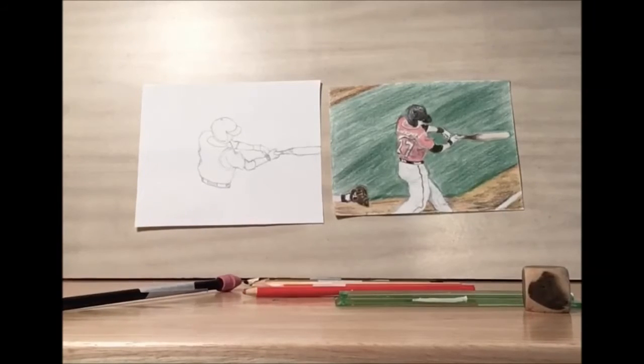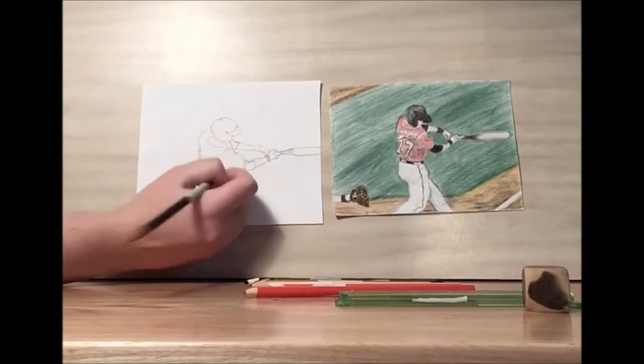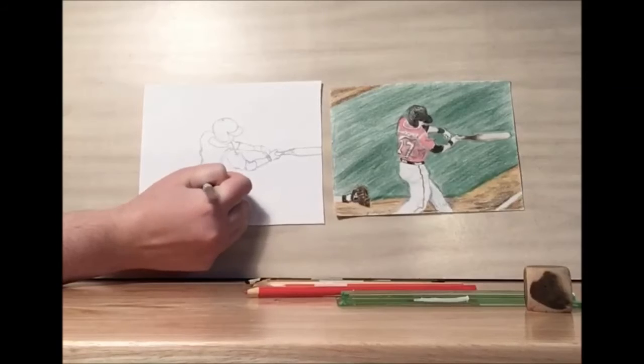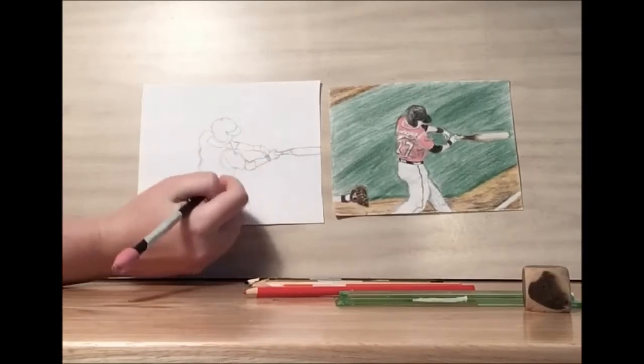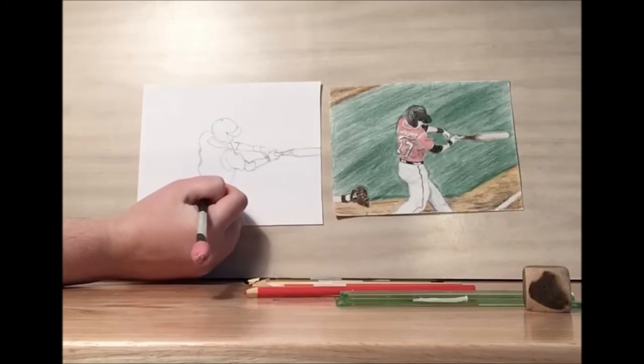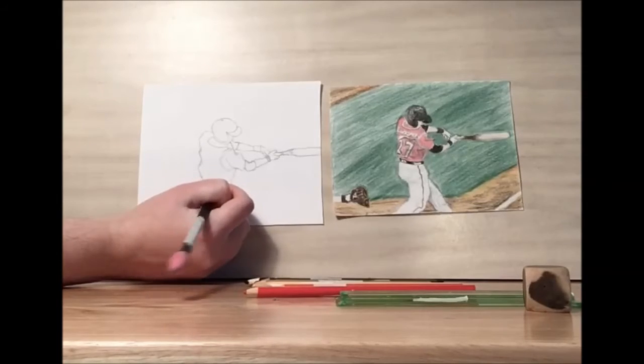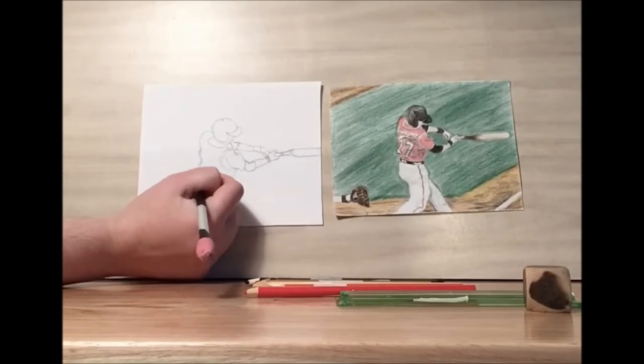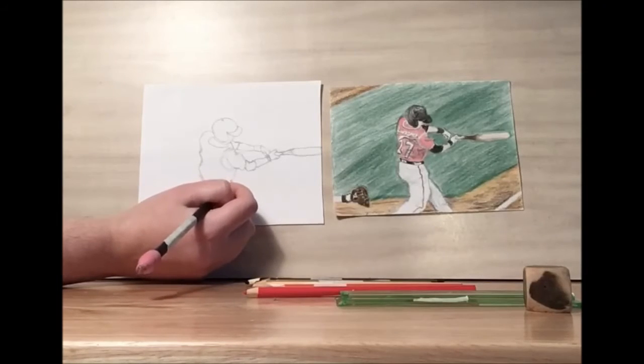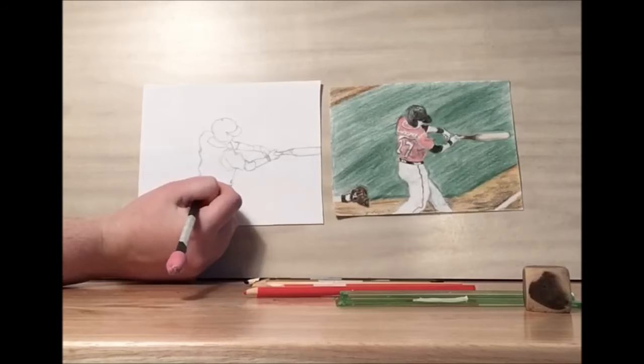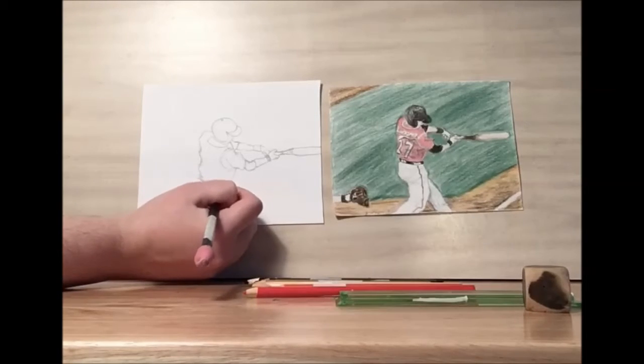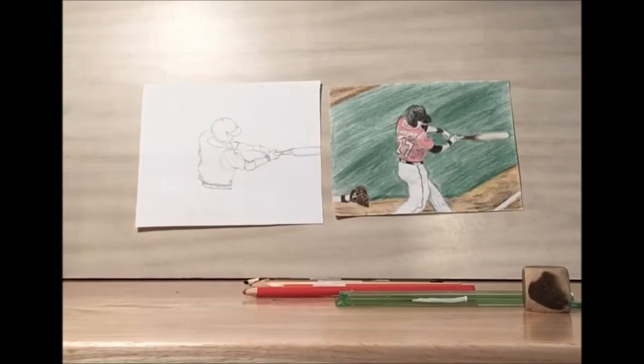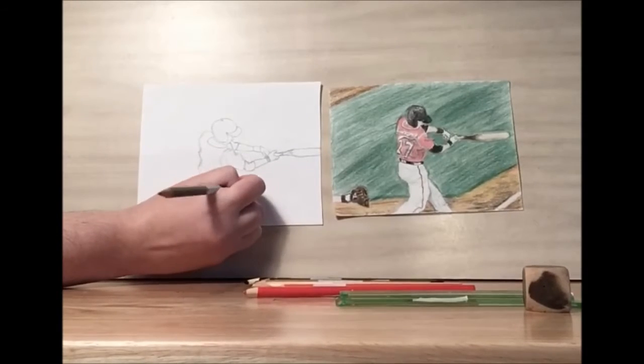Then let's take a step back. Now something I noticed when I took a step back is that the belt is actually in an angle, and we want the belt to be straight across, because we want to show that the player is grounded. So I'm going to add in some more wrinkles, and then the buckles. Take another step back. That looks better.